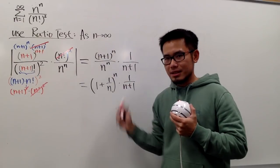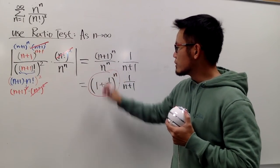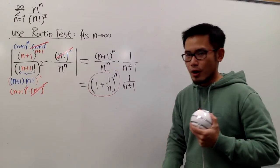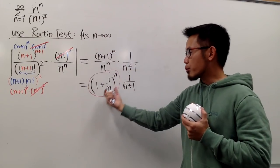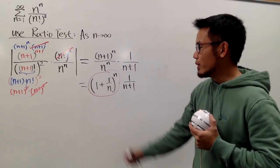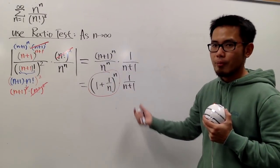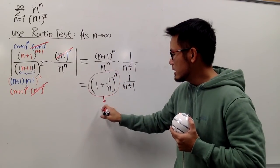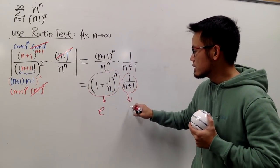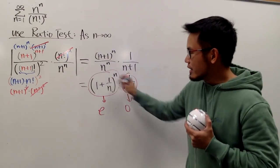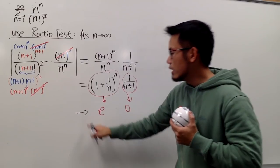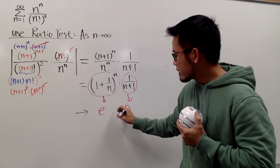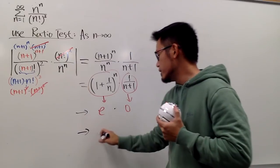Now we are taking a limit. Do we recognize, as n goes to infinity, what we get from (1 + 1/n)^n? This is going to be e. We are taking the limit of a product of two things: this part is finite and has a limit, and likewise this part has a limit. Therefore we can say the limit of this times the limit of that: the limit of (1+1/n)^n is e, and the limit of 1/(n+1) is 0 as n goes to infinity. So altogether, this approaches e times 0, which is 0.